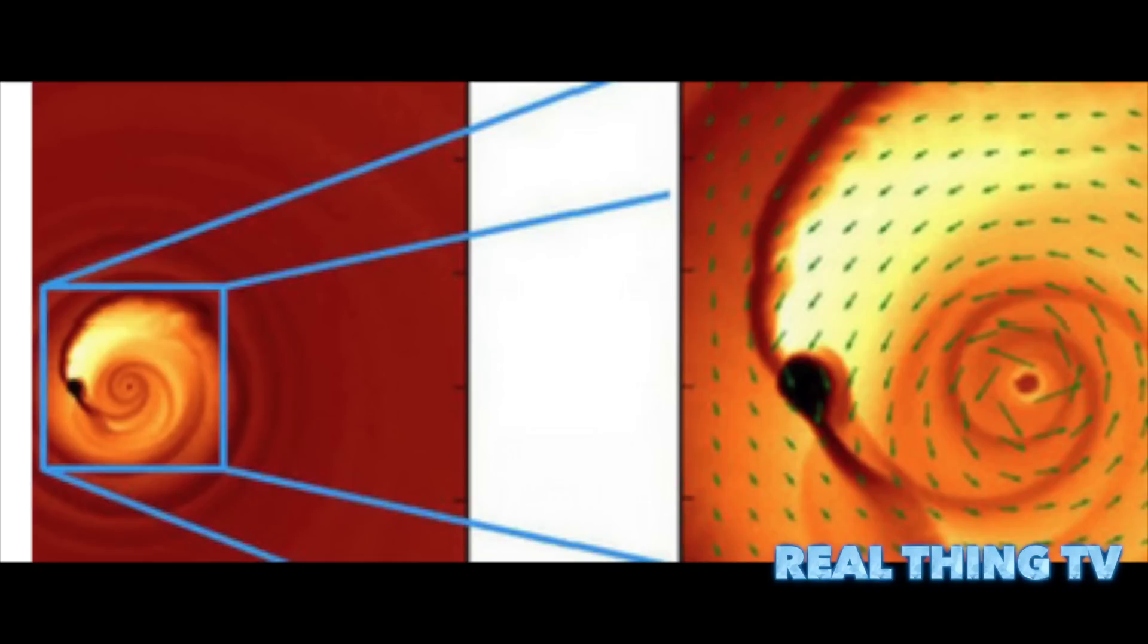Researchers are now studying this pair to better understand how galaxies and the monstrous black holes at their cores merge, a common occurrence in the early universe.